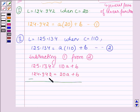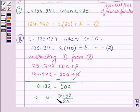Subtracting equation 1 from equation 2, we get 0.192 equals 90A. So this implies A equals 0.192 upon 90. Let this be equation number 3.